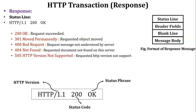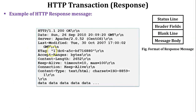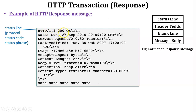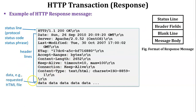Now let us discuss a real-time example of the response message. In this example, the first line shows the status line — HTTP/1.1 200 is the status code and OK is the status phrase. From the second line onwards it shows the header lines, indicating the header field. The last one is the HTML file, which is called the message body.